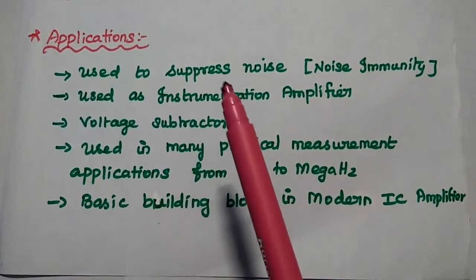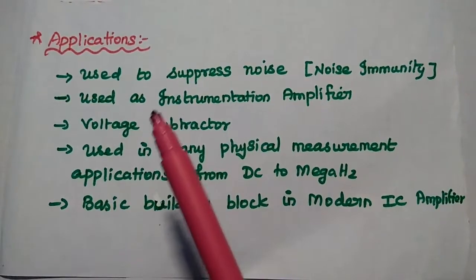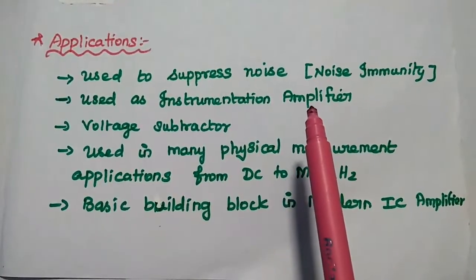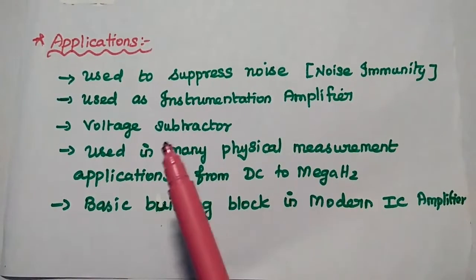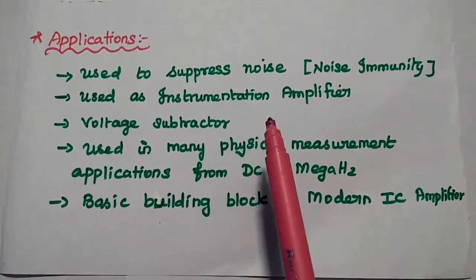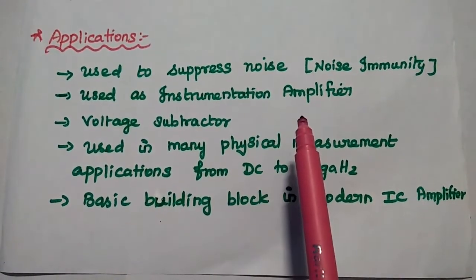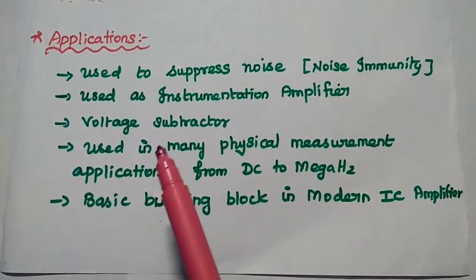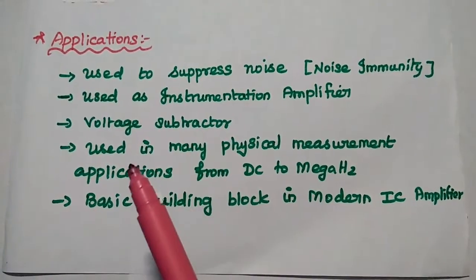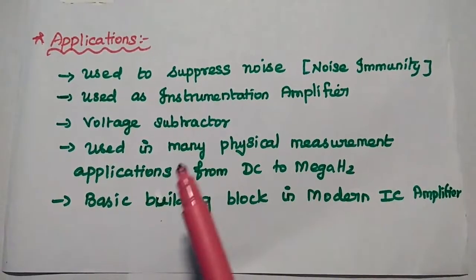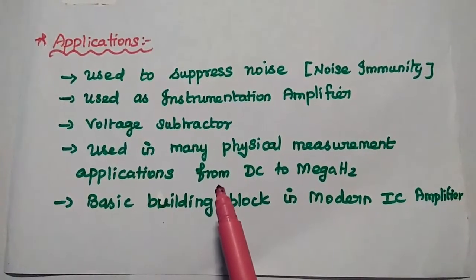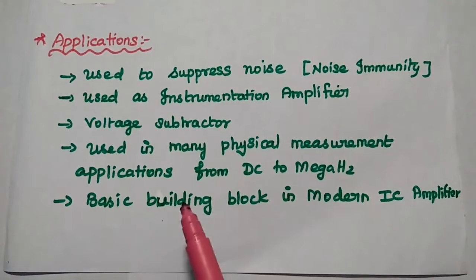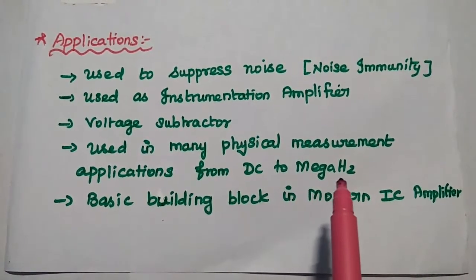The applications of differential amplifier include: it can be used to suppress noise signals in amplifier circuits, also expressed as a noise immunity circuit. It is used as an instrumentation amplifier, also known as a high gain differential amplifier. It can be used as a voltage subtractor. It is mainly used in many physical measurement applications ranging from DC to megahertz, and as a building block in modern IC amplifier circuits.